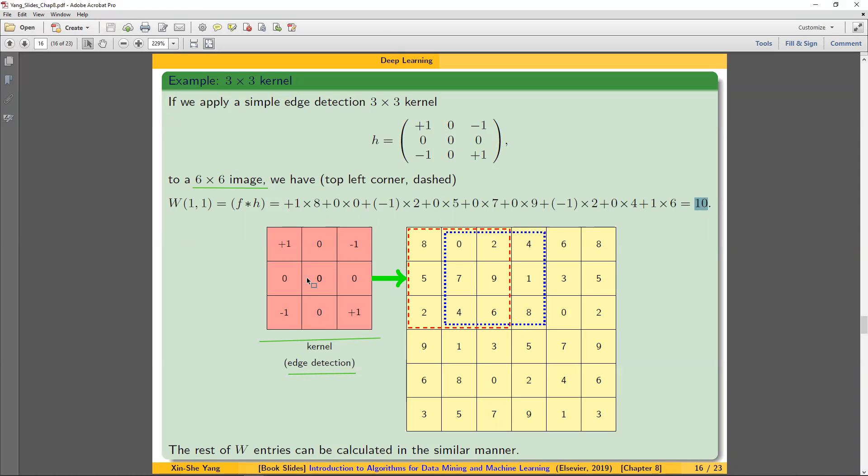And then if you move to the right, calculate the blue rectangle, what would be the output. Let's use positive one times zero is zero. Negative four. Zero, zero, zero. Negative four, that's negative eight. Plus positive eight becomes zero.